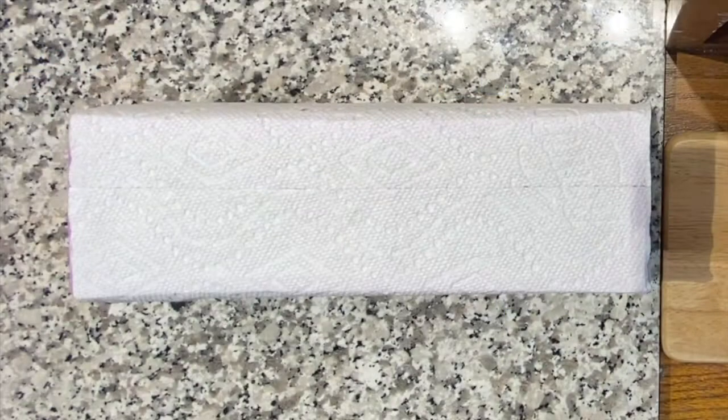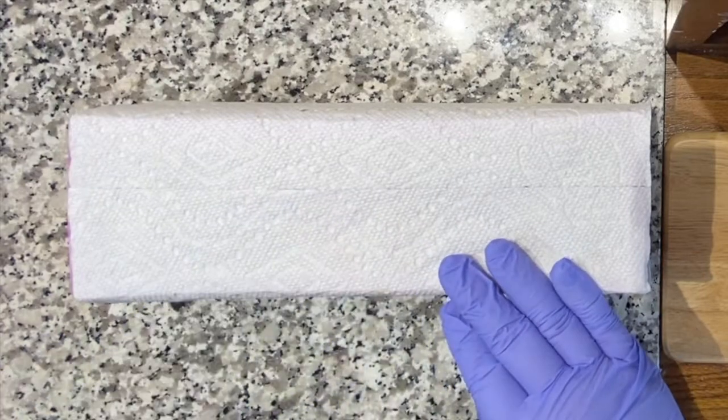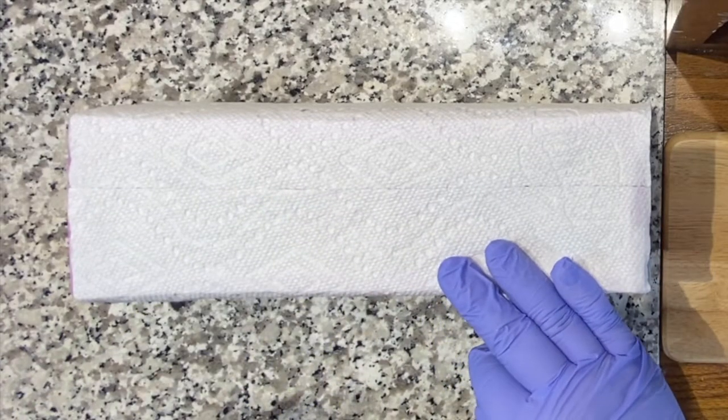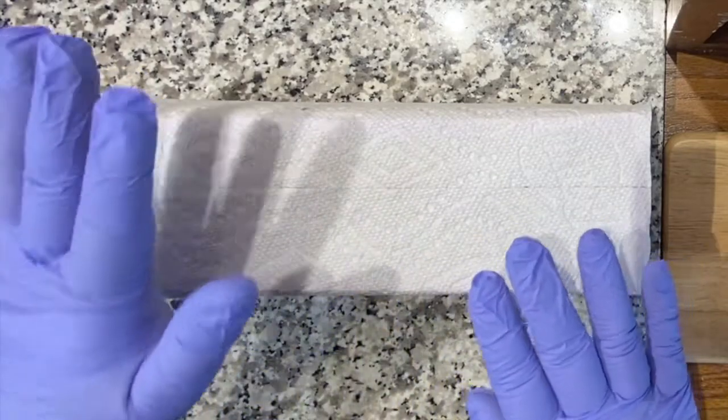This is called gel phase, and it looks something like warm Vaseline. This gel state starts in the center of the soap, where heat is trapped, and it spreads to the edges of the mold. This is what goes on during the 24 or so hours between pouring a soap and unmolding a soap.